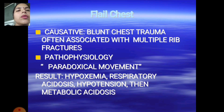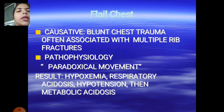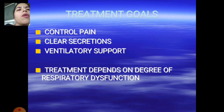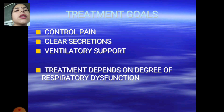Flail chest is caused by blunt chest trauma, often associated with multiple rib fractures. The pathophysiology involves paradoxical movement of the chest wall, resulting in hypoxia, hypoxemia, respiratory acidosis, hypotension, and metabolic acidosis. Treatment goals include controlling pain and clearing secretions, with ventilatory support as needed.